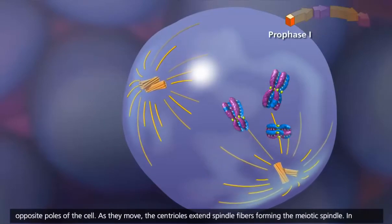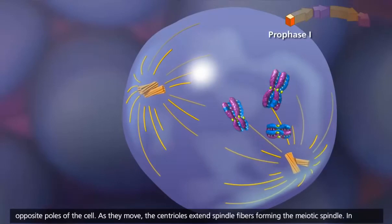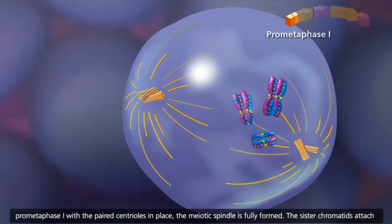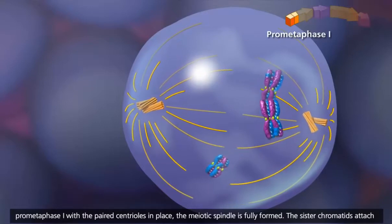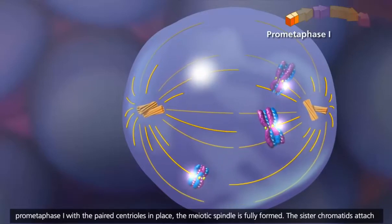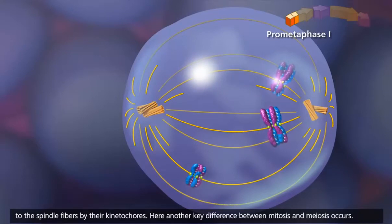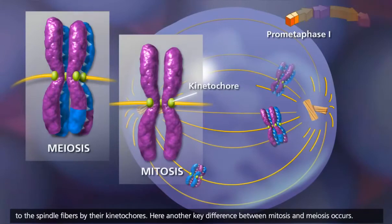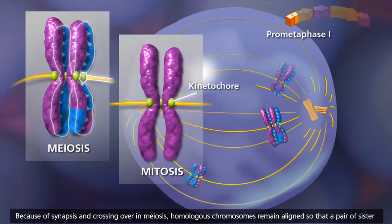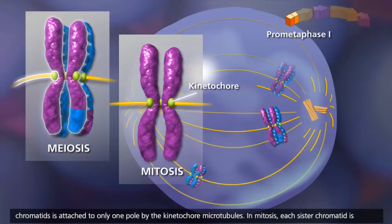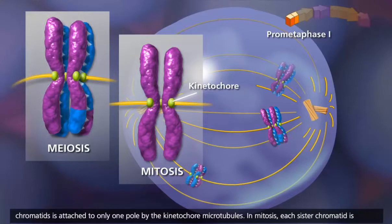As they move, the centrioles extend spindle fibers, forming the meiotic spindle. In prometaphase I, with the paired centrioles in place, the meiotic spindle is fully formed. The sister chromatids attach to the spindle fibers by their kinetochores. Here, another key difference between mitosis and meiosis occurs. Because of synapsis and crossing over in meiosis, homologous chromosomes remain aligned, so that a pair of sister chromatids is attached to only one pole by the kinetochore microtubules.